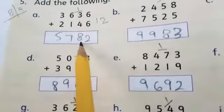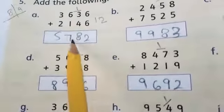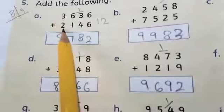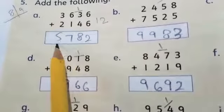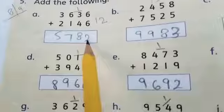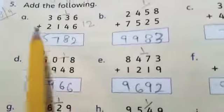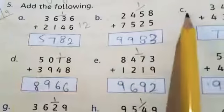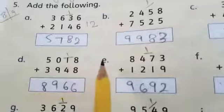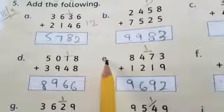7 plus 1 is 8. 6 plus 1, 7, 3, 4, 5. Answer is 5782. First, you have to do 1s and 10s which means you have to complete part a, b, c, d, and e in question number 5.